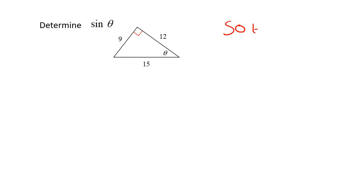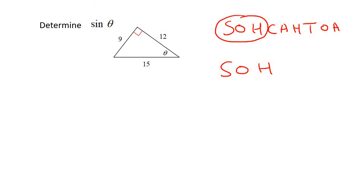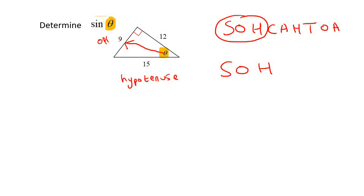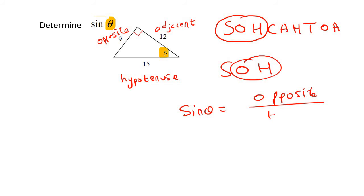Here's a sin example. Let's first write down SOHCAHTOA — for sin it's S-O-H. We need to go get all our sides. We're starting at this angle, which is the theta angle. The side opposite the right angle is called the hypotenuse. The side opposite the angle you're looking at is called the opposite. The other one is the adjacent. So sin theta is equal to opposite over hypotenuse, which is 9 over 15. You can simplify that to 3 over 5.